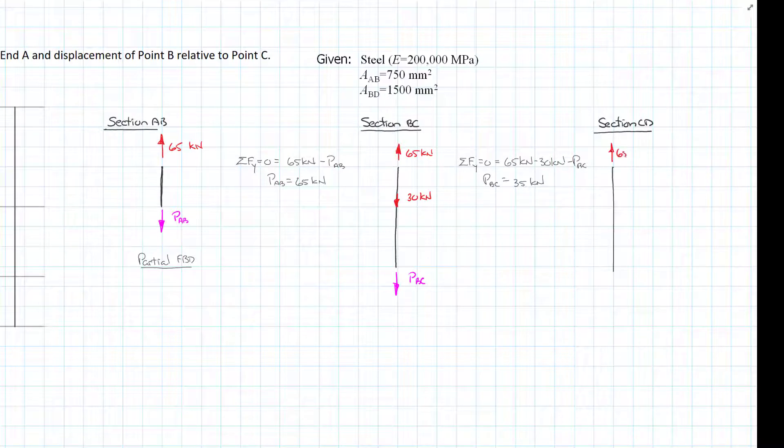Again we have 65 kilonewtons at the top, partway down we have our 30 kilonewtons acting down, then we have our 60 kilonewtons acting down, leaves our internal force P_CD.